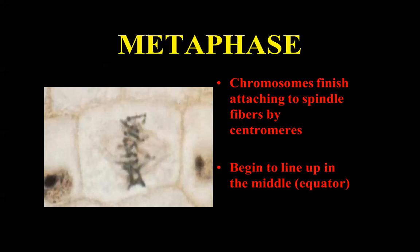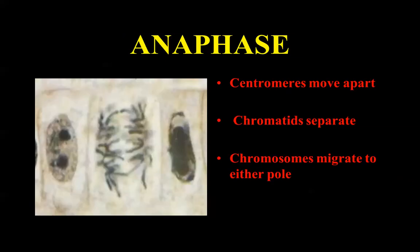The separation stage for all of the divisions we're going to learn, whether it's mitosis or meiosis, is always anaphase. Anaphase is the separation — you pull it apart. Think about 'A' for apart. The centromeres are going to pull apart, the spindle fibers shorten and coil up, and the chromatids separate. That's the biggest thing.